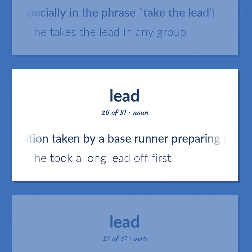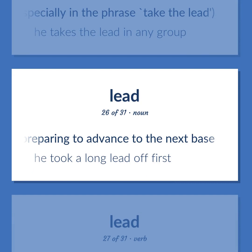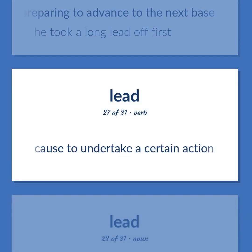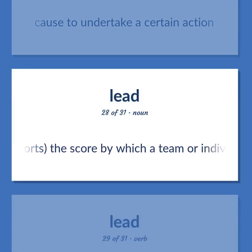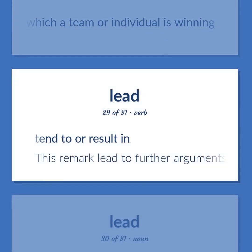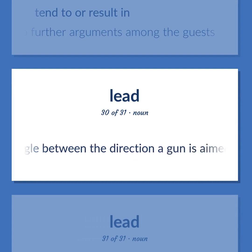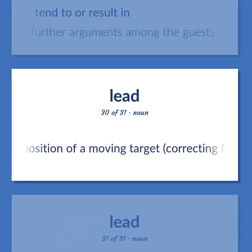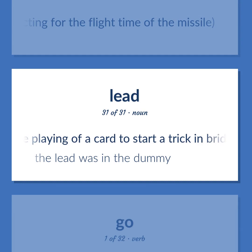Baseball: the position taken by a base runner preparing to advance to the next base — 'He took a long lead off first.' Cause to undertake a certain action. Sports: the score by which a team or individual is winning. Tend to result in — 'This remark lead to further arguments among the guests.' The angle between the direction a gun is aimed and the position of a moving target, correcting for the flight time of the missile. The playing of a card to start a trick in bridge — 'The lead was in the dummy.'